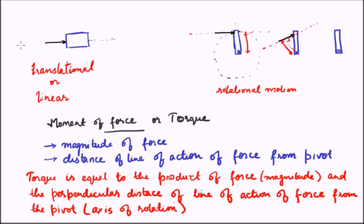Now let us take a further extension — the extreme example. The same body, but the force is applied in such a way that the line of action of force actually passes through the axis of rotation. In this case, since the line of action of force passes through the axis of rotation, the perpendicular distance turns out to be zero. Therefore, the torque or the moment of force, when the force is applied in this direction, will be zero.